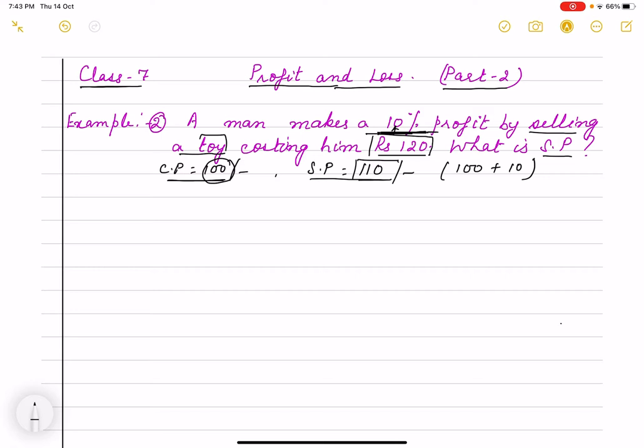I take the ratio we need: our CP is 100 and we want 10 percent profit, that means it is 110. This is my CP, this is SP. And at present, according to question, CP is 120 rupees and SP we don't know.